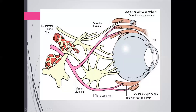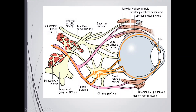The superior division goes to the levator palpebrae superioris and superior rectus. The inferior division goes to the inferior rectus, inferior oblique, and carries parasympathetic fibers that leave to reach the ciliary ganglion, then via the short ciliary nerve to the iris. This is why, if the parasympathetic fibers are affected, we will have a dilated pupil.